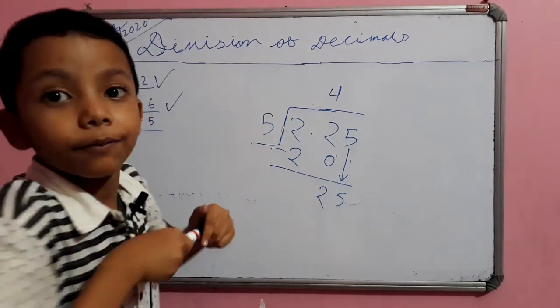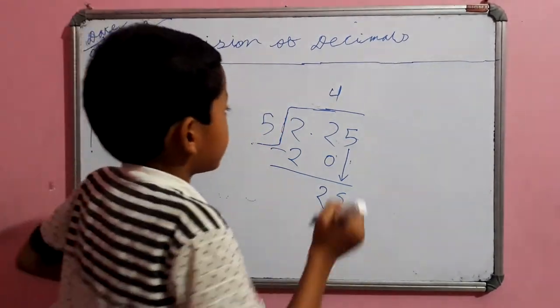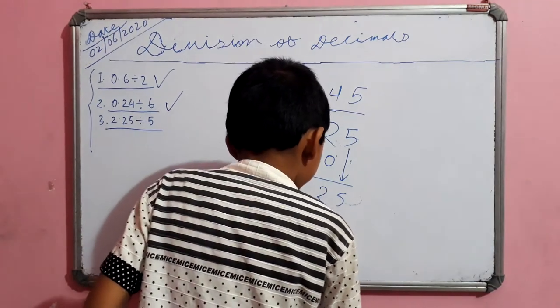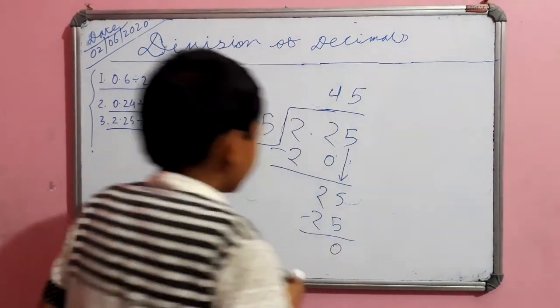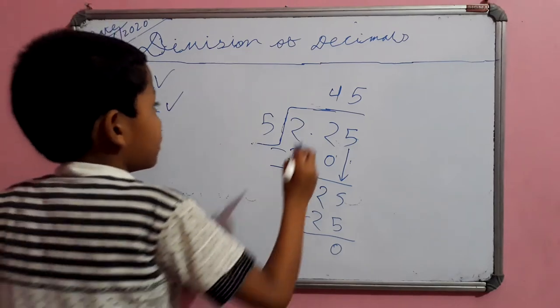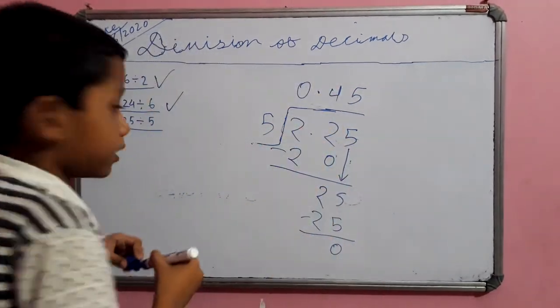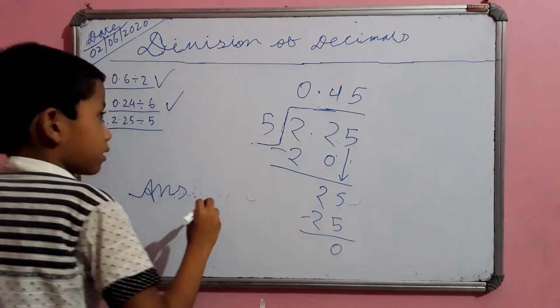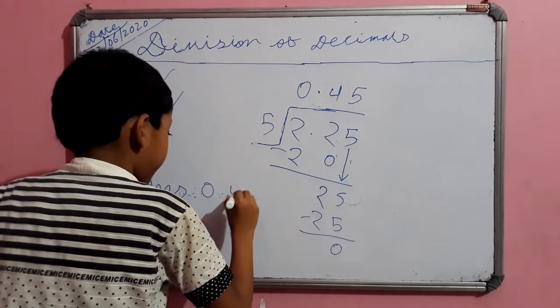And as how many 5 will fit into 25? It is easy. It is 5. We can place 25 here and subtract. We get none. We can put a decimal number here and 0 here. Answer. Answer is 0.45.